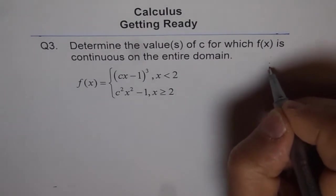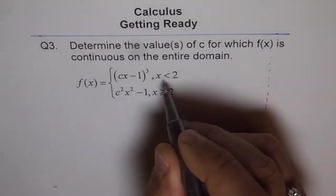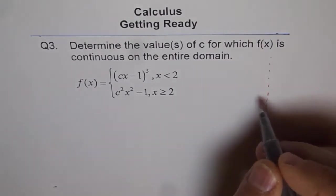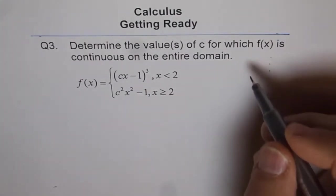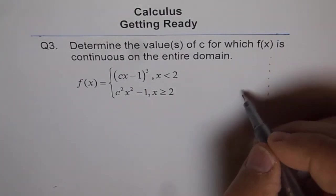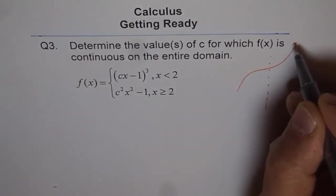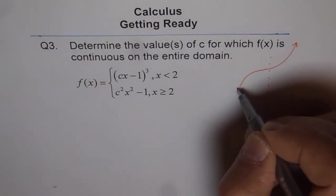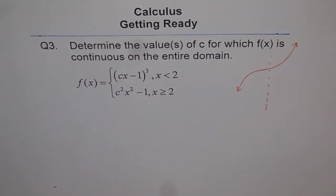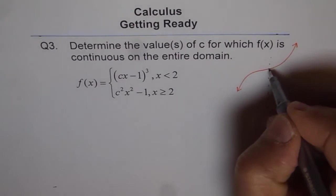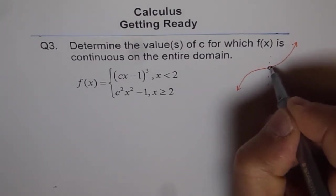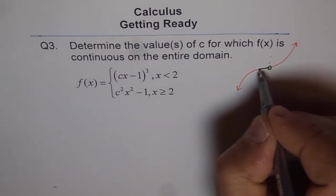So what I am trying to say is, if this is my line for x equals 2, then this function will be something like this. It's a cubic function. We are assuming c to be positive, something like this. But in this case, we are only considering this part of the function, so we don't really go beyond that.